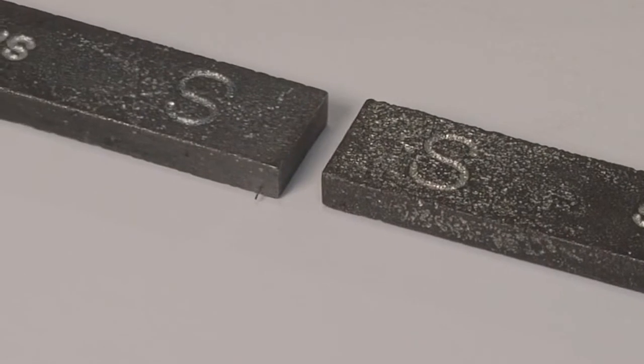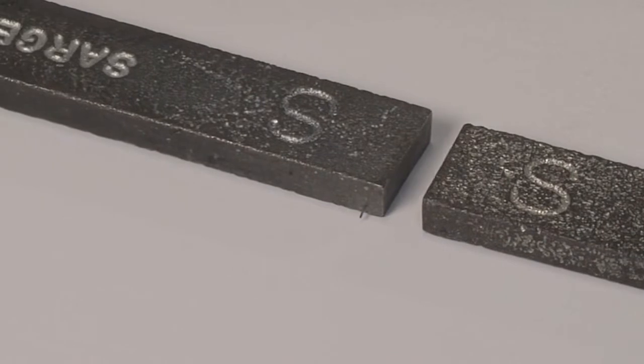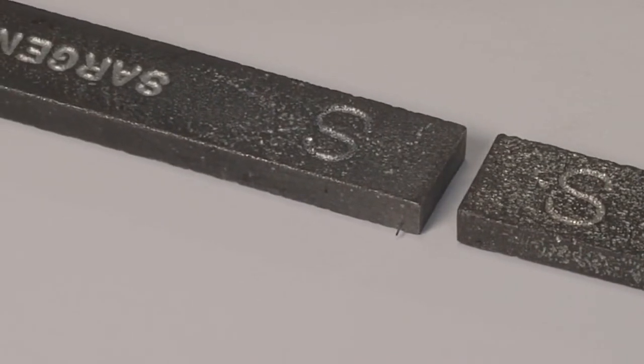Try the same thing with the ends marked with the letter S. So, we now know that the ends of a magnet marked with the same letter repel each other.